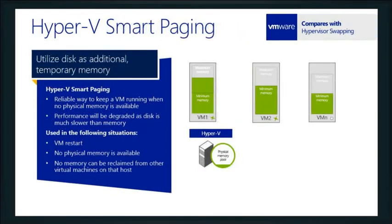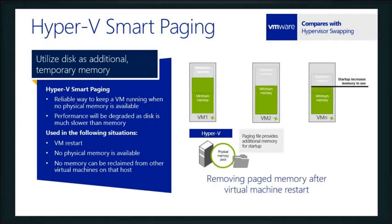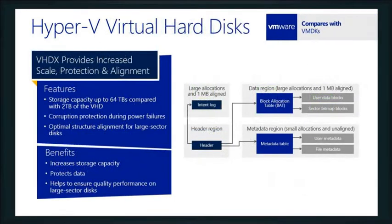Smart paging is all about when do I want to use my memory versus my actual hard drive space. There will be times when you've given a virtual machine a certain amount of RAM and it's not using that amount, but there might be requests that need to leverage that RAM. It's Hyper-V's way of saying, for this particular access, I can move this down to the page file while that request is being used — but the minute that VM says it needs that memory back, it gets it back. That's very similar to what hypervisor swapping does for VMware. Eventually that memory is reclaimed after startup.